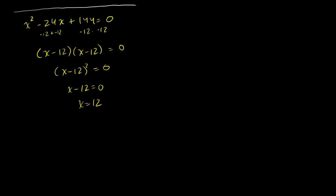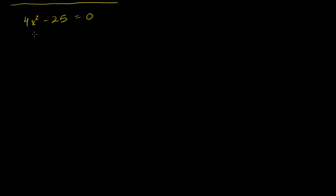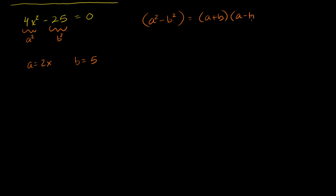Let's do one more: 4x squared minus 25 is equal to 0. You can see the pattern — this is a squared minus b squared, where a equals 2x and b equals 5. So 4x squared minus 25 factors as 2x plus 5 times 2x minus 5, and that equals 0.